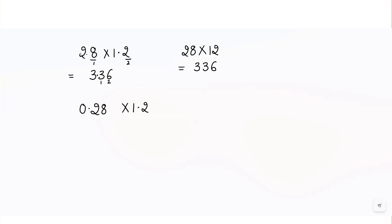Similarly, if I write 0.28 × 1.2, since the numbers are kept the same the answer will again be 336 when I multiply 28 with 12. But here we need to see how many digits are after the point — there are one, two, and three digits after the point. That means in the answer there should also be three digits after the point, giving 0.336.